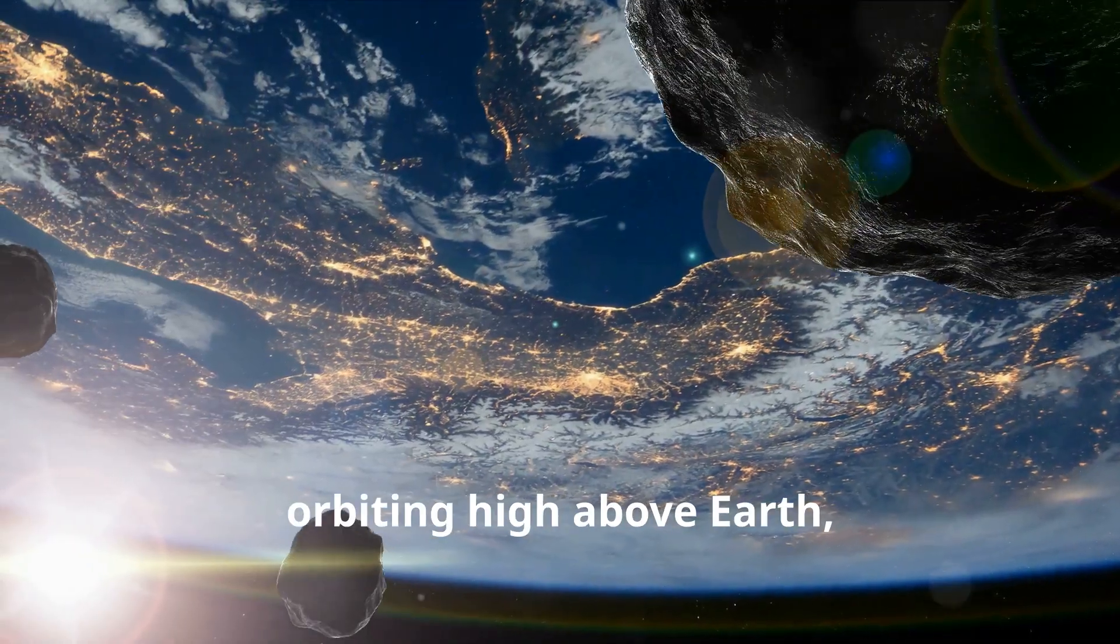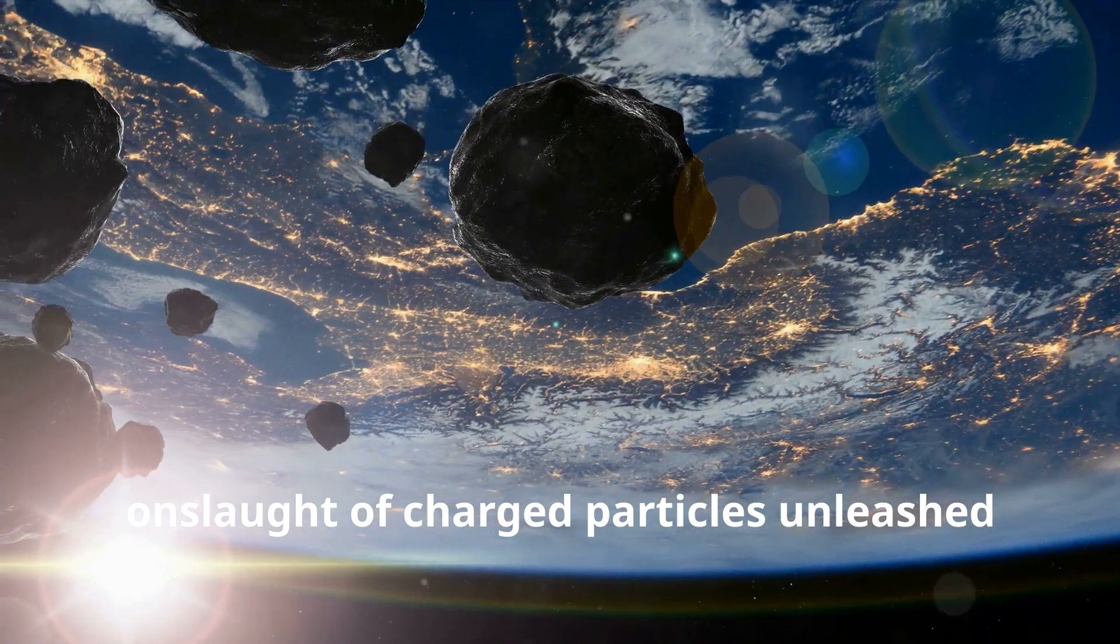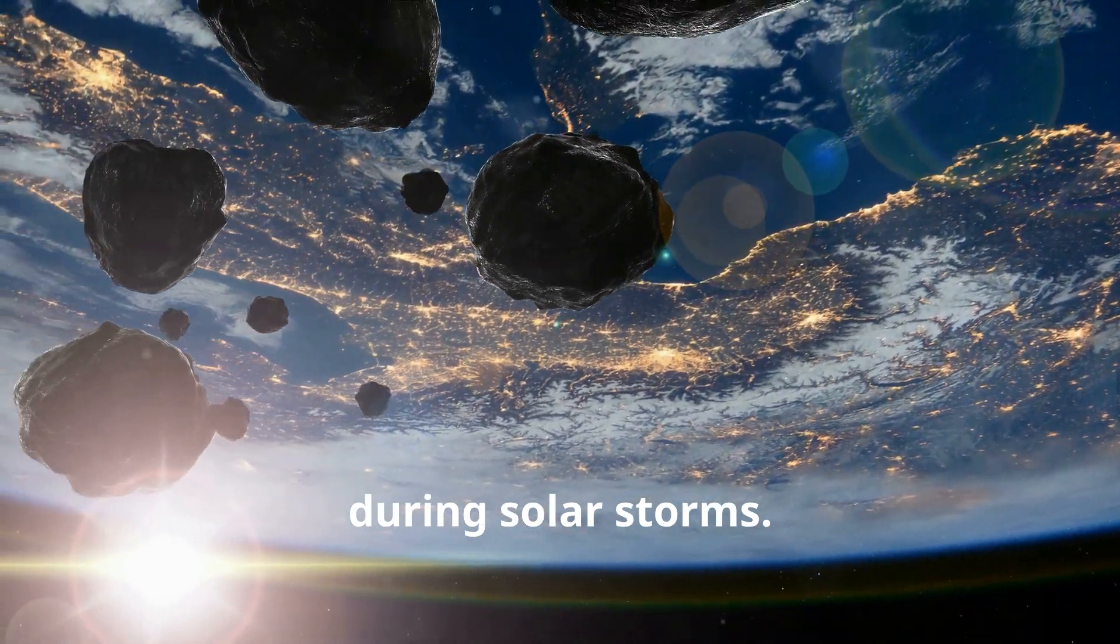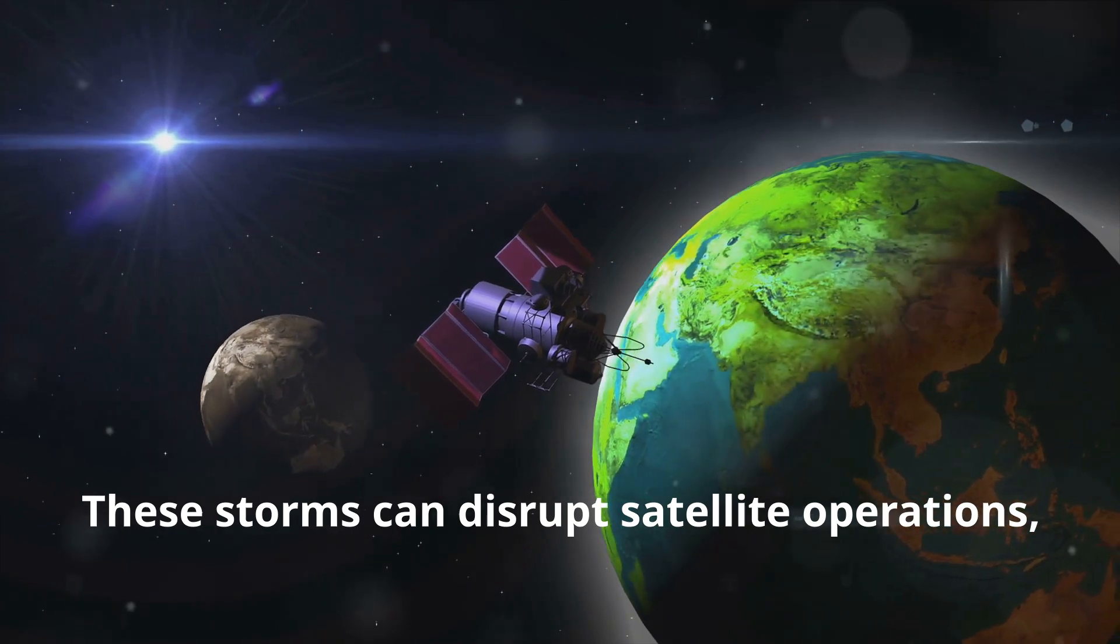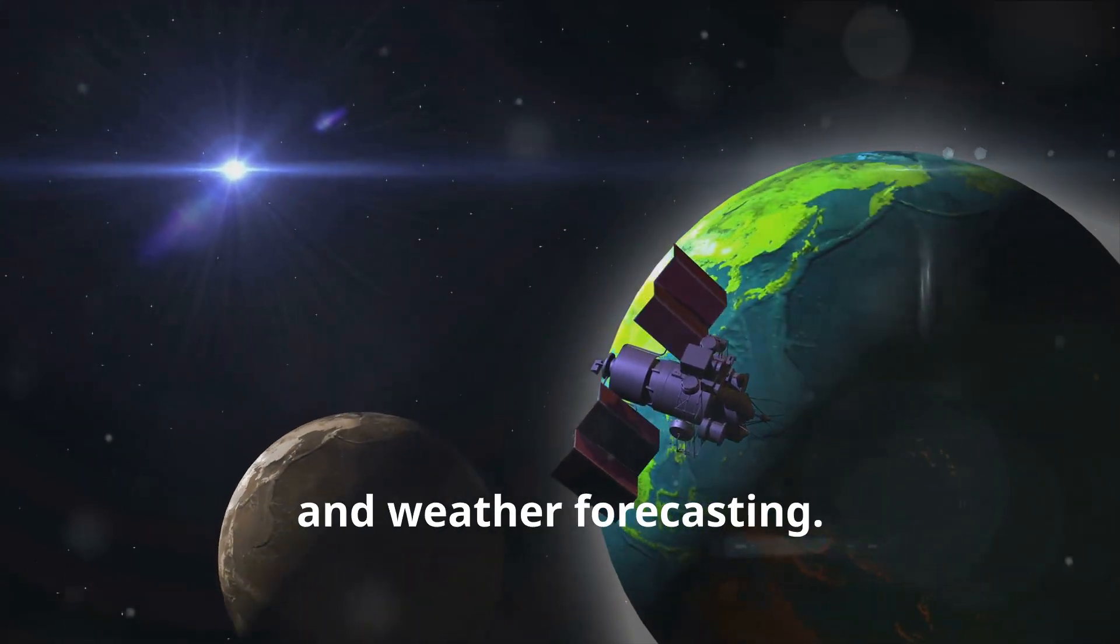Satellites, orbiting high above Earth, are particularly susceptible to the onslaught of charged particles unleashed during solar storms. These storms can disrupt satellite operations, affecting communication networks, GPS navigation, and weather forecasting.